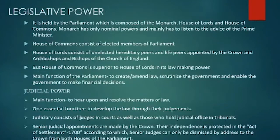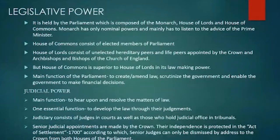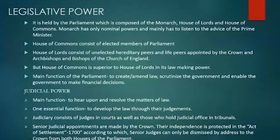The legislative power in the UK is held by parliament, composed of the monarch, House of Lords, and House of Commons. The monarch has only nominal powers and mainly follows the advice of the prime minister. The House of Commons consists of elected members of parliament, while the House of Lords consists of unelected hereditary peers and life peers appointed by the Crown, as well as archbishops and bishops of the Church of England. The House of Commons is superior to the House of Lords in lawmaking. The main functions of parliament are to create or amend law, scrutinize the government, and enable financial decisions.